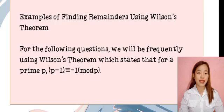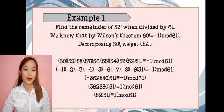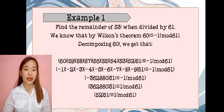For the better understanding of Wilson's Theorem, let me state some examples. For the following questions, we will be frequently using Wilson's Theorem, which states that for a prime P, P minus 1 factorial is identical to negative 1 mod P. Example number 1: Find the remainder of 53 factorial when divided by 61. We know that by Wilson's theorem, 60 factorial is identical to negative 1 mod 61.